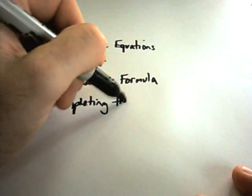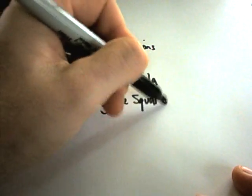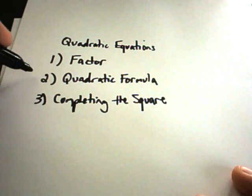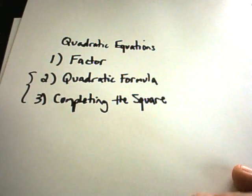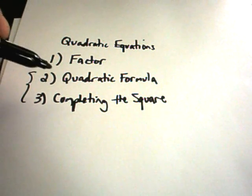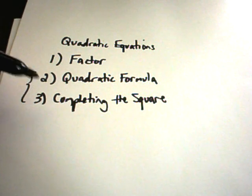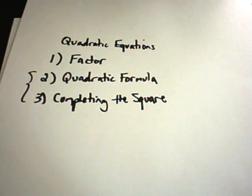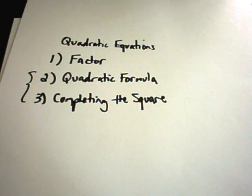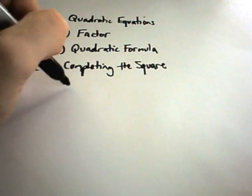In general, factoring is easiest if you know it factors easily. If not, the quadratic formula or completing the square — although they'll be slightly longer procedures — sometimes that's just simply the way you have to do it to get it to work out.